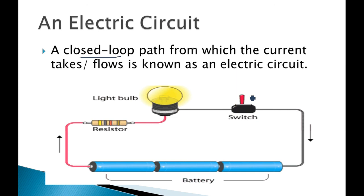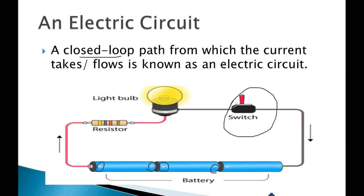In a circuit diagram you can see a switch, and a battery with plus and negative signs for three cells joined together. When you switch on, current flows from the positive terminal through the wires. The wires are connected — not open — so ultimately the current has a closed path. When the path is closed, your bulb will glow.